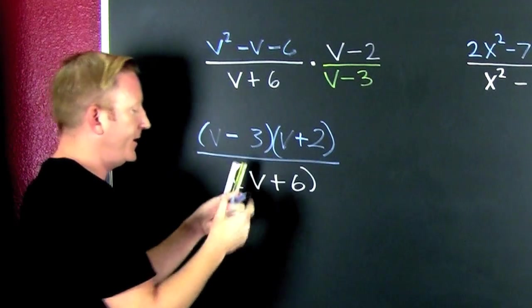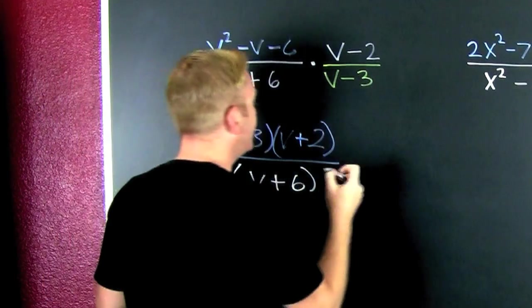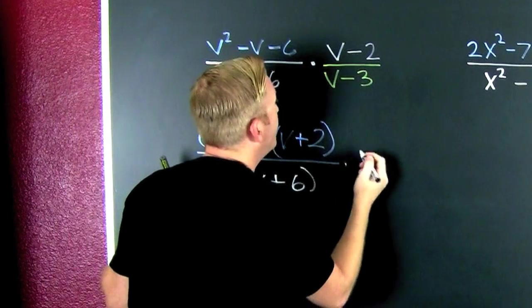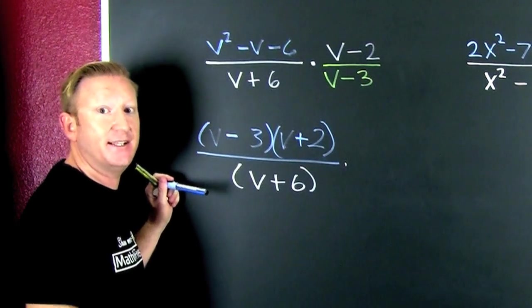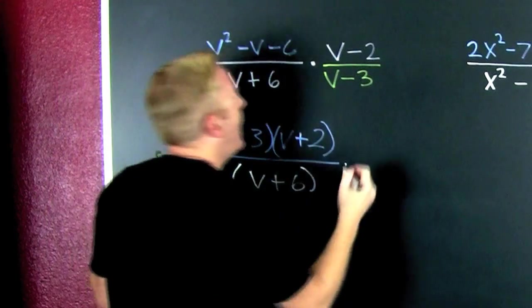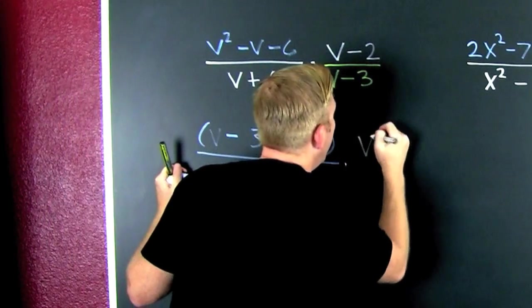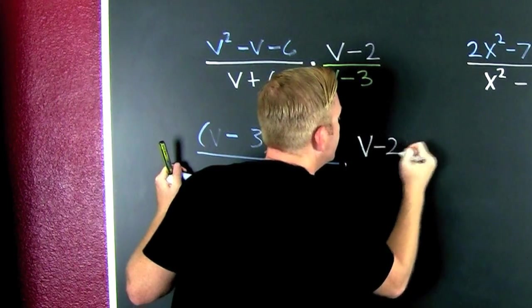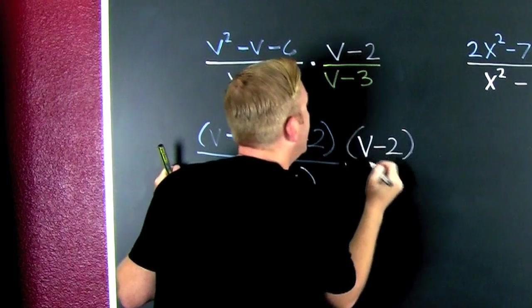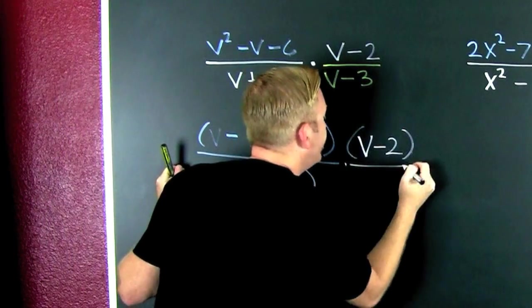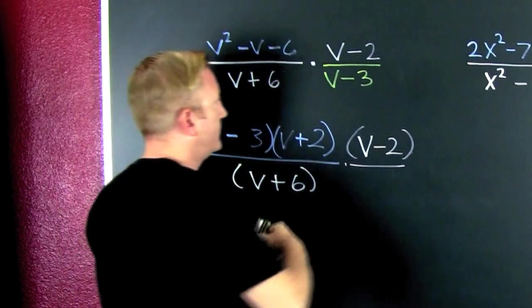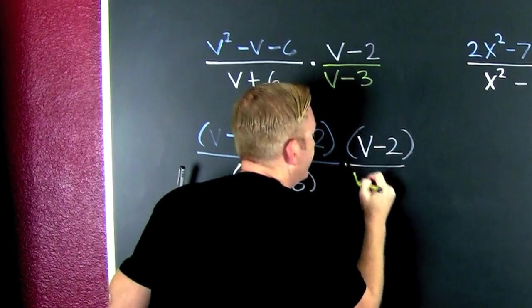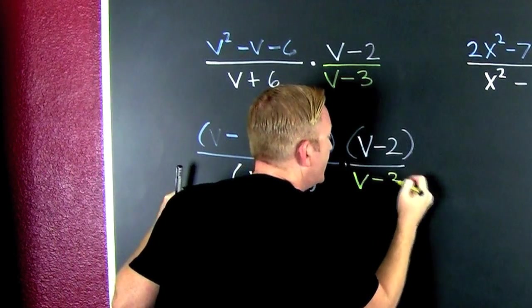Then I'm going to take that and I'm multiplying it by that guy. It doesn't factor because nothing comes out. And I see I have a V minus 2, and that's all. V minus 3 though.